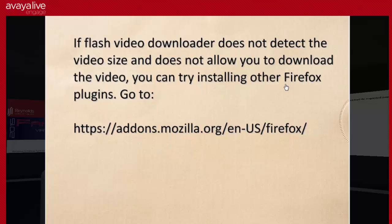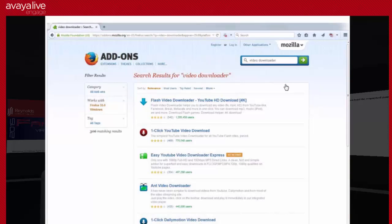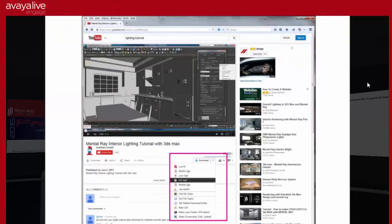Sometimes Flash Video Downloader won't detect your video size and won't allow you to download it. If there's a video and you're having trouble, there are some other Firefox plugins that will work as well. You can go to add-ons.mozilla.org, do a search for 'video downloader,' and there are a bunch of other options there. In my browser I actually have another add-on installed in addition to Flash Video Downloader — it shows up in a different spot, so you'd just want to try to access it that way.